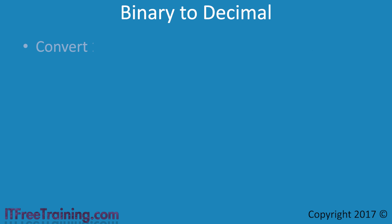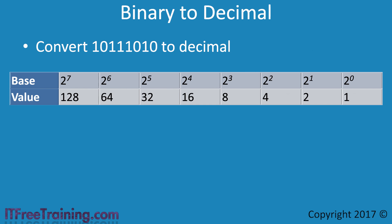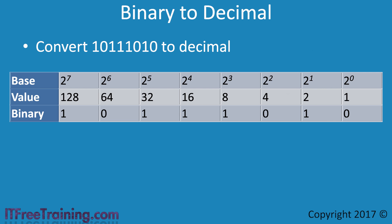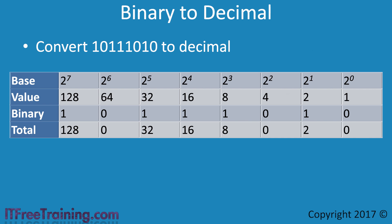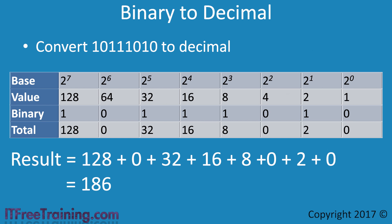If I want to convert the following binary number to decimal, I would use the following table. Each binary position has a value based on a power of 2. To convert the binary number, it is just a matter of adding it to the table. If the value is 1, the power of 2 value is used; otherwise the total is 0. Once all the totals have been worked out, it is just a matter of adding them up to get the value.